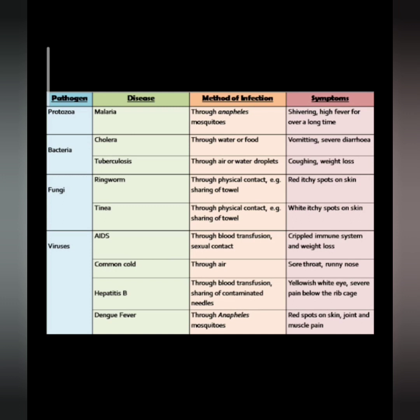Here are some examples of diseases caused by such pathogens. As you can see, malaria is caused by a protozoa known as Plasmodium. Cholera is caused by Vibrio cholerae and tuberculosis is caused by Mycobacterium tuberculosis. Ringworm and tinea are caused by fungus. Whereas AIDS, common cold, hepatitis B, dengue fever, and of course our current coronavirus are caused by viruses.